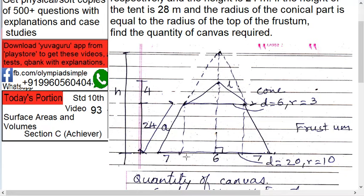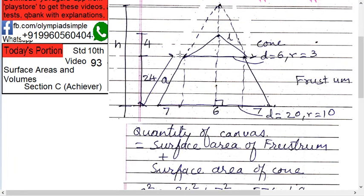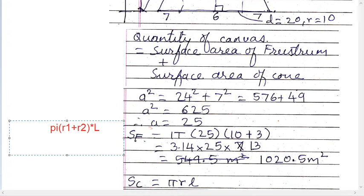14 divided into two parts: 7 and 7. This height is 24, this is 7. So the slant height using Pythagorean theorem: l² = 24² + 7² = 576 + 49 = 625. So l = √625 = 25. The slant height is 25.